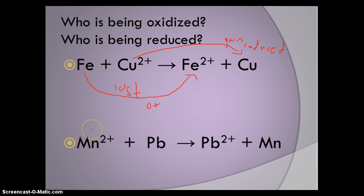Let's look at the example on the bottom. Here we have Mn2+ becoming Mn. To lose its plus 2, it had to gain two electrons, meaning Mn was reduced. Pb went to Pb2+, meaning it lost two electrons, so it is oxidized.